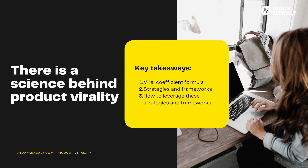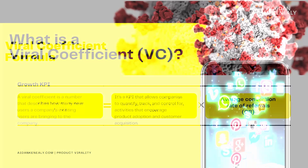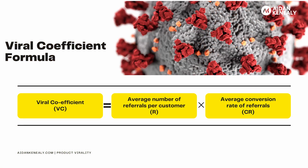And so we're going to start with number one. Let's explore the concept of the viral coefficient and what this means for virality. A viral coefficient is a number that describes how many new users a company's existing users are bringing to the company. It's a growth KPI that allows companies to quantify, track, and control for activities that encourage product adoption and customer acquisition. The viral coefficient is calculated using the following formula: